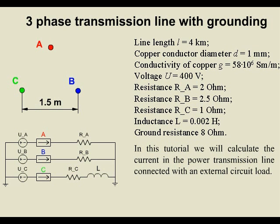Resistance A: 2 ohms. Resistance B: 2.5 ohms. Resistance C: 1 ohm. Inductance: 0.002 henrys. Ground resistance: 8 ohms.